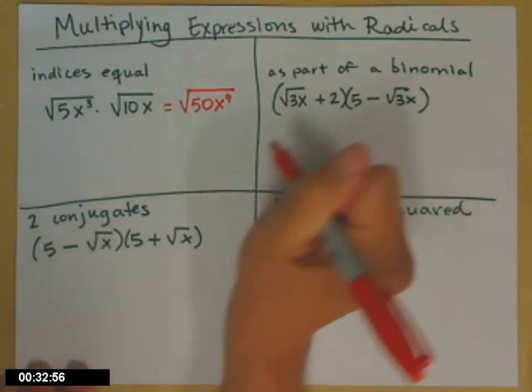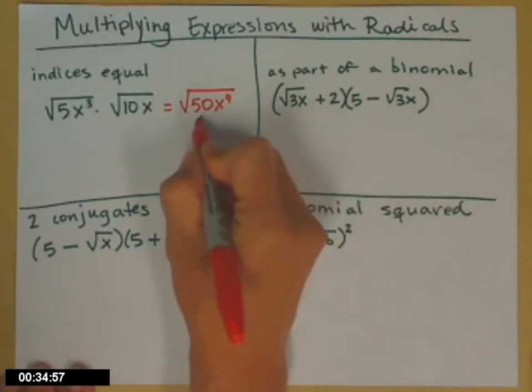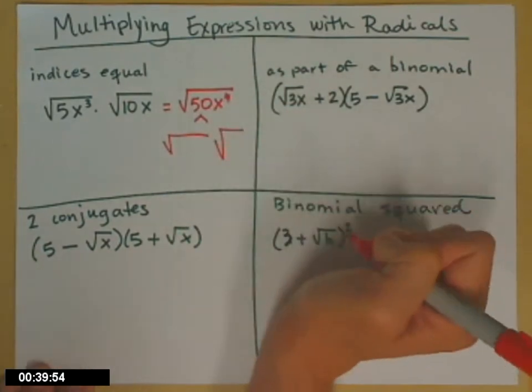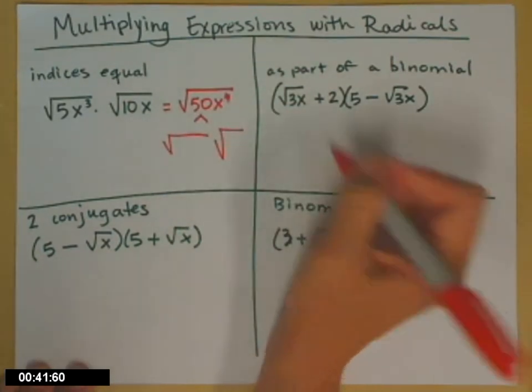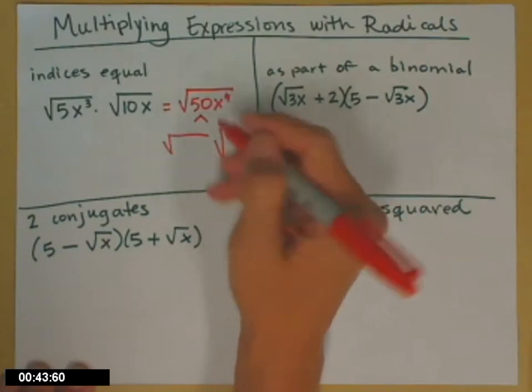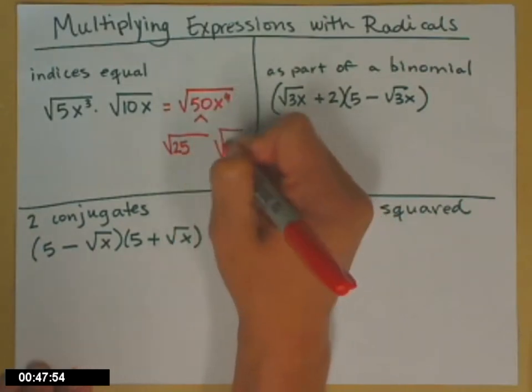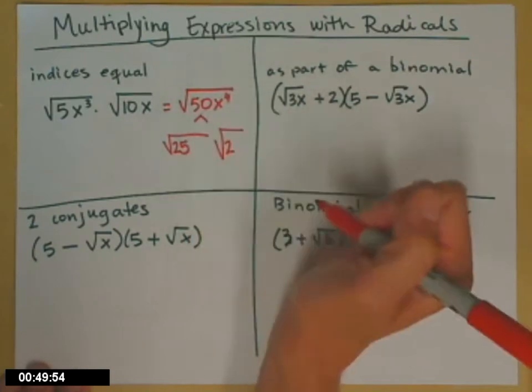But now, since we've done our simplifying, we're going to go ahead and break that up into its perfect square factors and its leftover factors so that we can write it in its simplest form. So 50, a perfect square that goes into 50 is 25. Its leftover factor would be 2. 2 times 25 is 50.